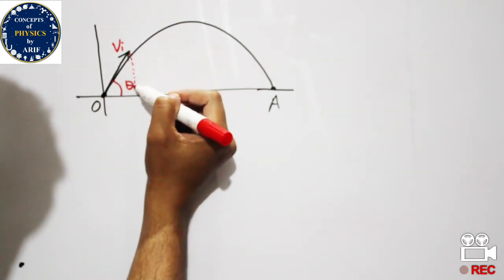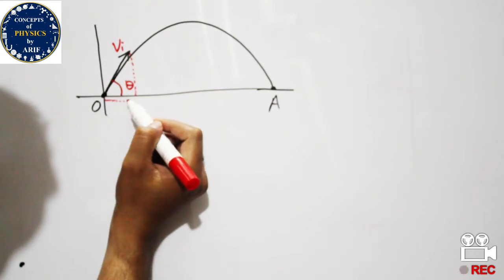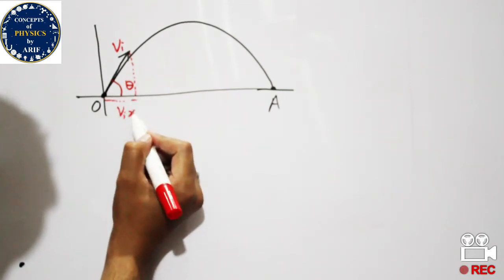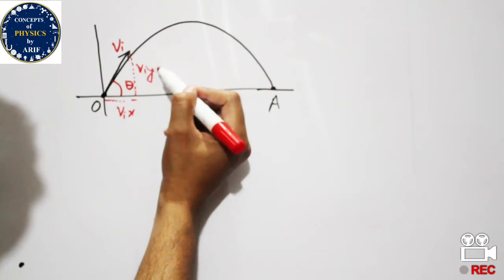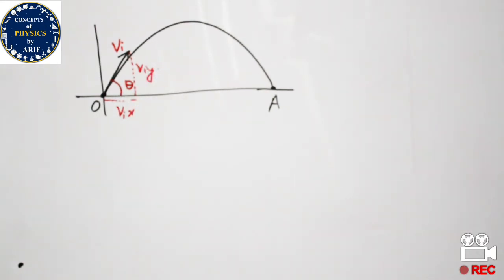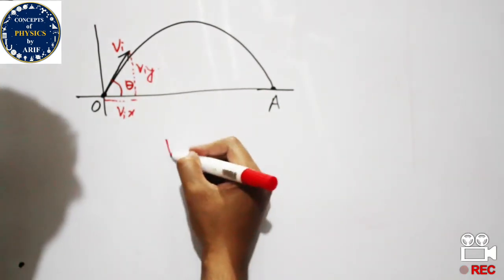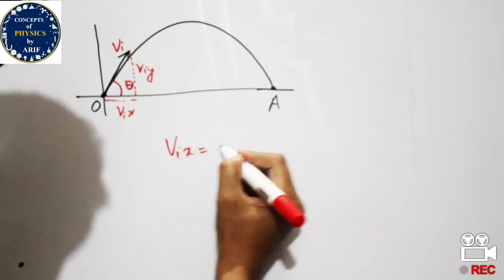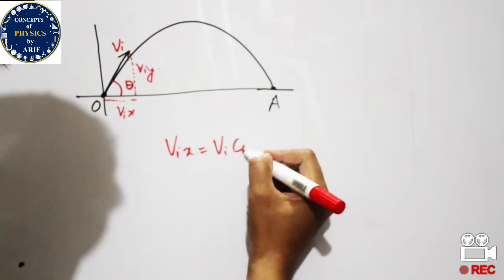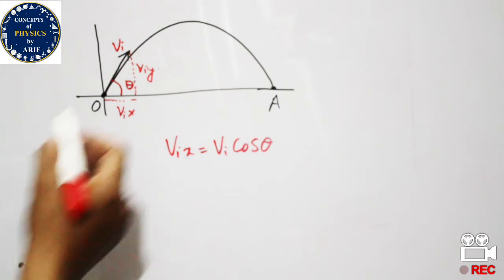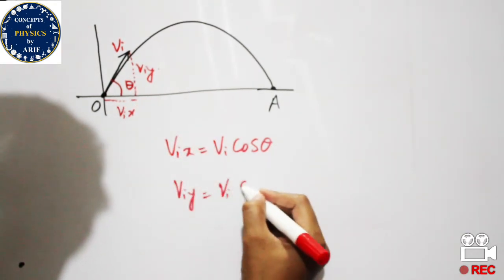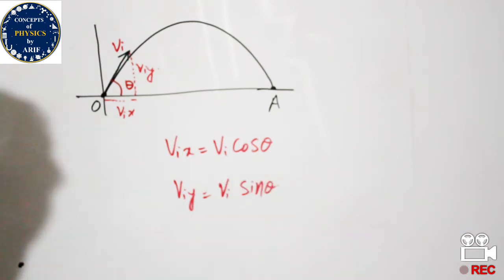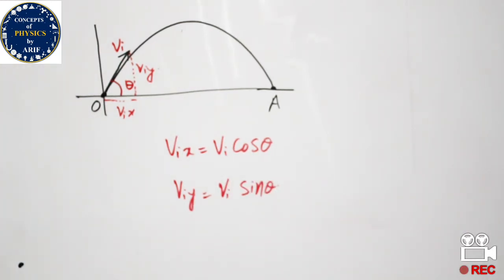The rectangular components are Vix, the horizontal component, and Viy, the vertical component. We know that Vix = Vi·cos(θ) and Viy = Vi·sin(θ). These are the rectangular components of the initial velocity.